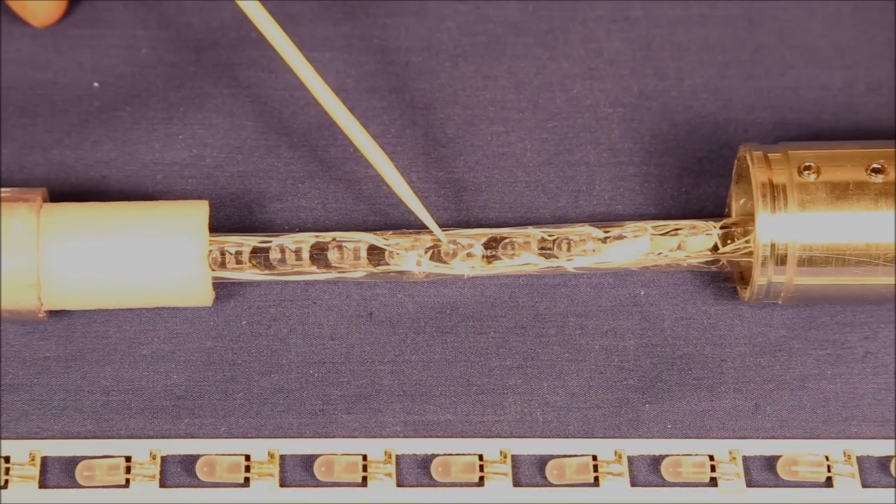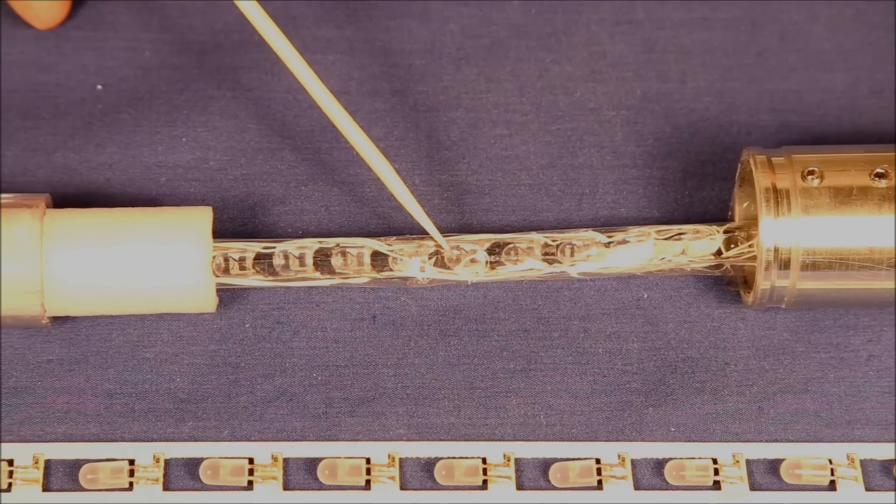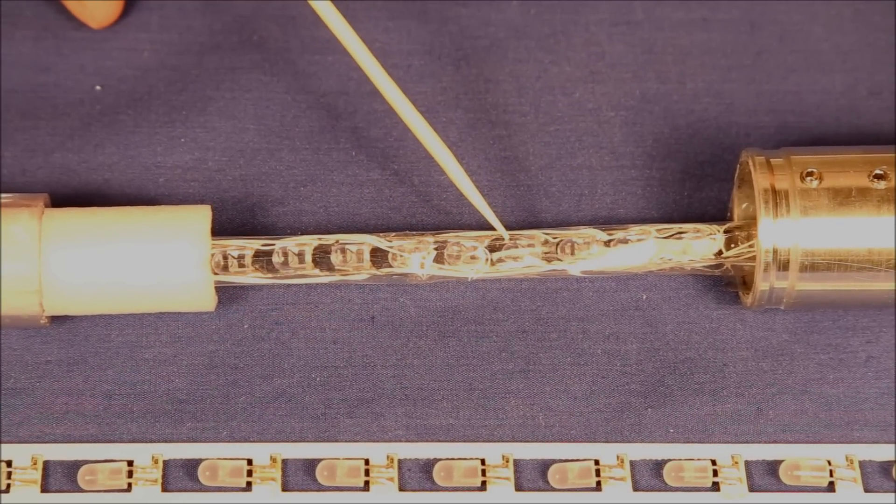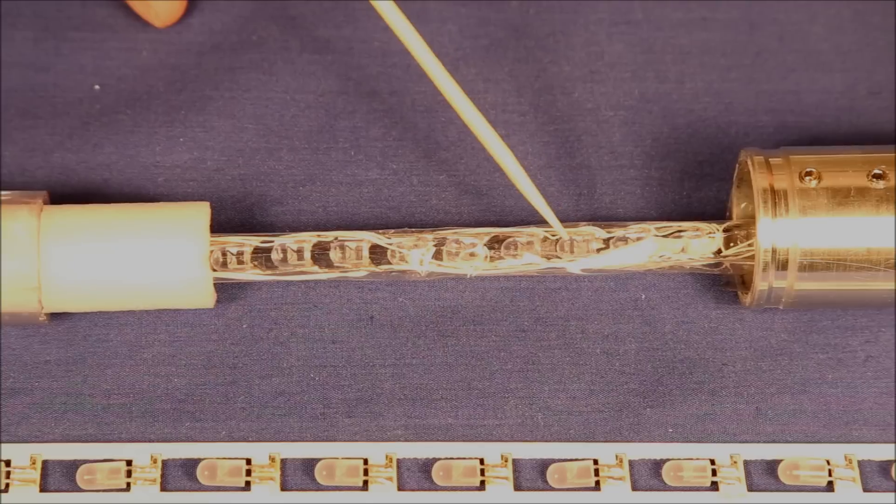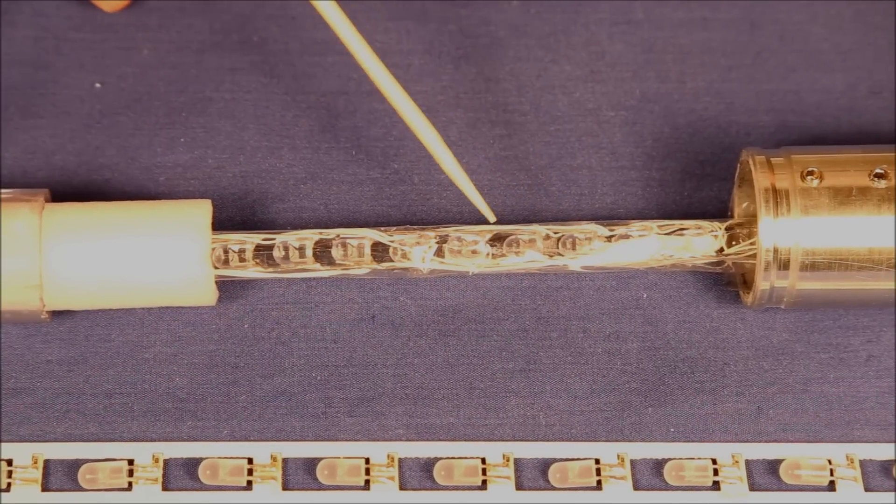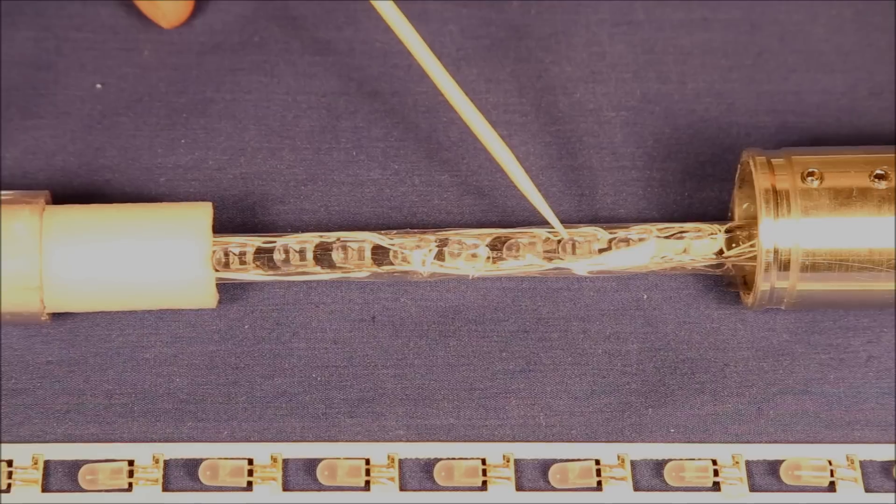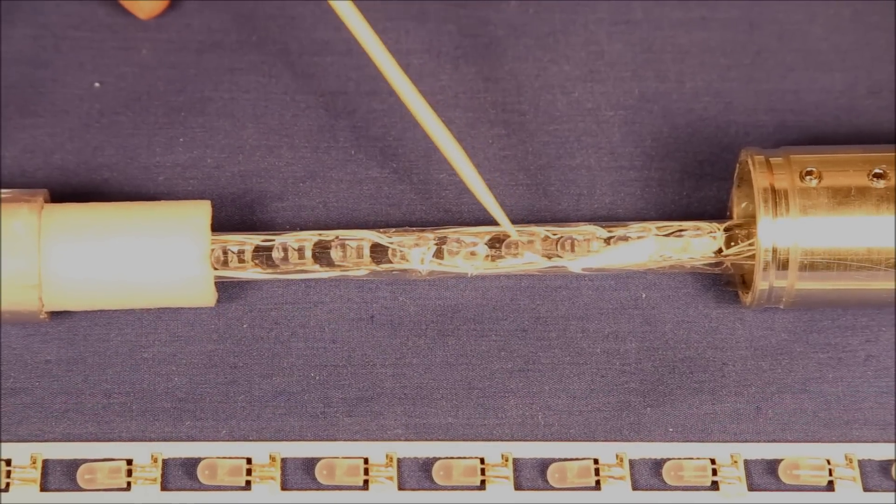One of the problems with increasing lightsaber brightness by putting more and more LEDs together is, first of all, if you're using 5mm LEDs, it's hard to get more than about 2.7 per inch because at that point they're actually bumping up against each other.